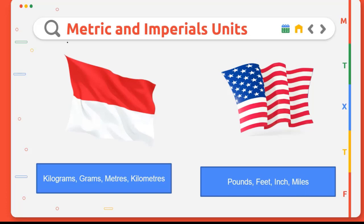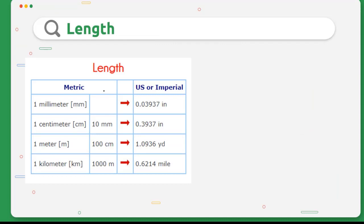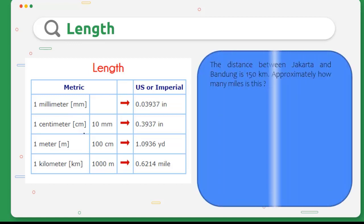Let's find out together the relation between metric and imperial units. This is the relation of metric and imperial units in length measurement. For example, the question will be: the distance between Jakarta and Bandung is 150 kilometers. Approximately, how many miles is this? The relation between kilometer and miles is 0.6214 miles for 1 kilometer.